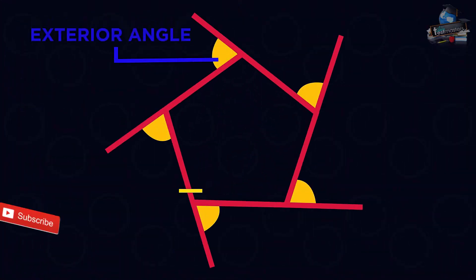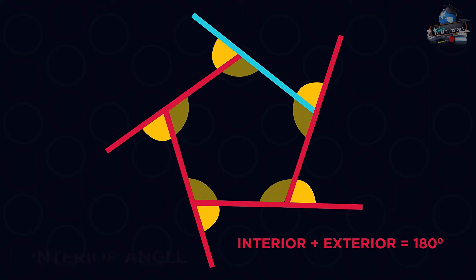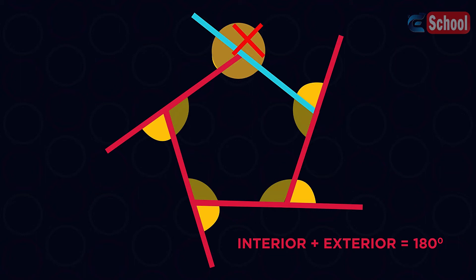So let's have a look at exterior angles. They're a little strange. Exterior angles make a straight line with the interior angle. They aren't the whole outside angle, but just the part that makes a straight line.